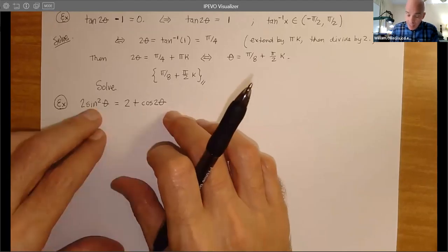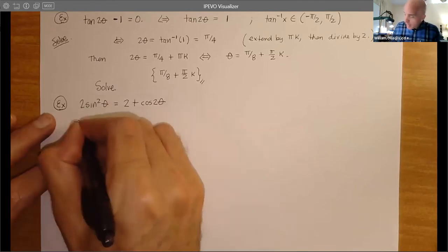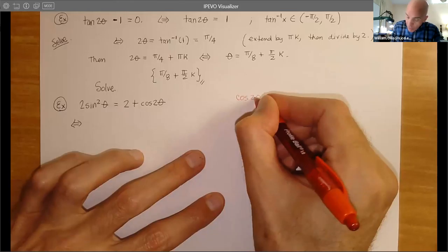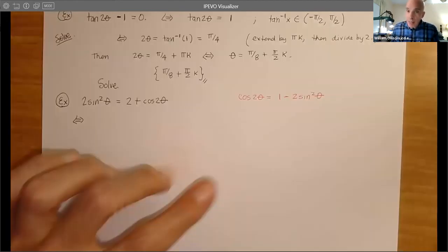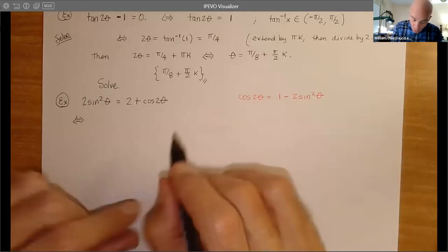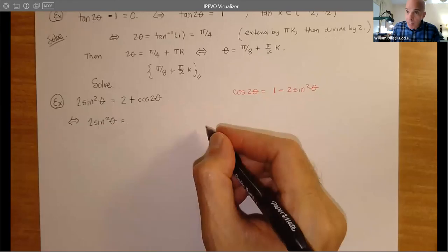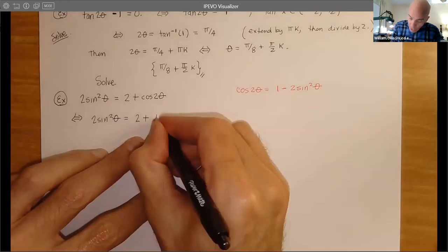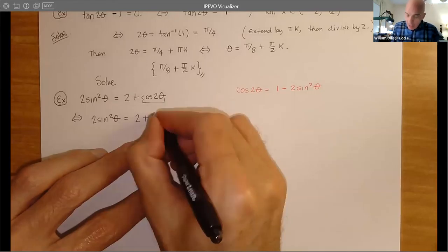We can say: write everything in terms of sine. So remind yourself — cos(2θ) can be written as 1 - 2sin²θ. That's the double-angle formula used for power reducing. So we have 2sin²θ = 2 + (1 - 2sin²θ). Then we get 4sin²θ = 3. Let's divide by 4: sin²θ - 3/4 = 0. That's a difference of two squares — if we think of this as (sinθ - √3/2)(sinθ + √3/2) = 0.